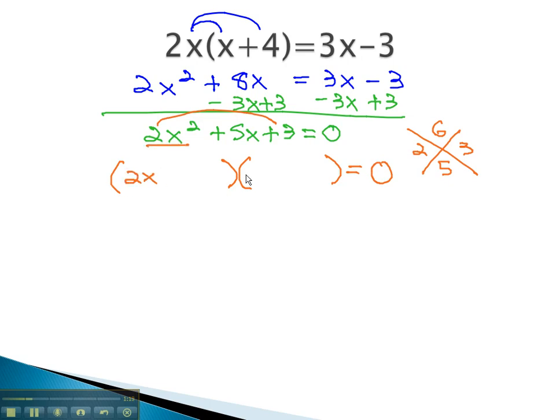The only way to multiply to 2x squared is 2x times x. This means on the outside we're multiplying by 2, and the only way to get one of our numbers is 2 times 1, which equals 2. In the inside we have x times 3 to give us the 3x. Now we have our expression factored, and so we can make each factor equal to zero.